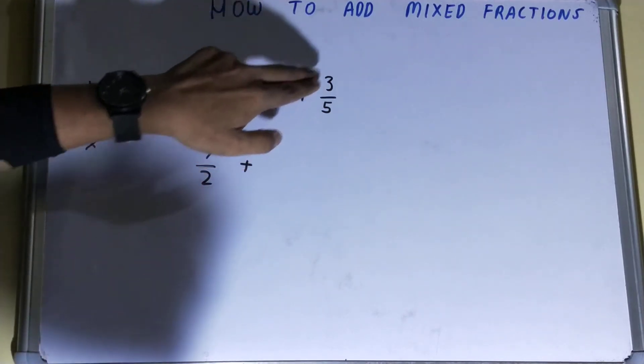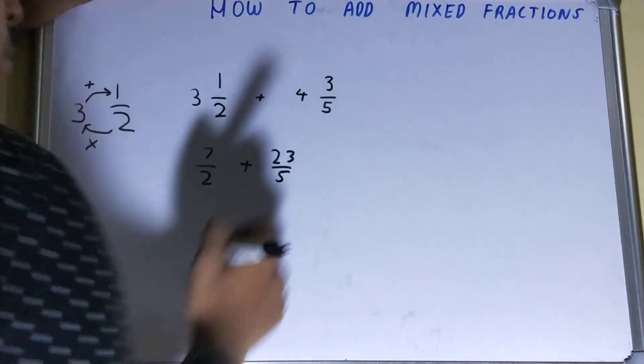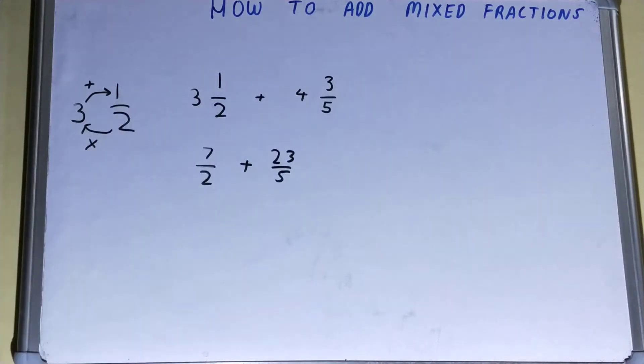4 times 5 equals 20, 20 plus 3 equals 23 by 5. So now we have made it to a proper fraction.